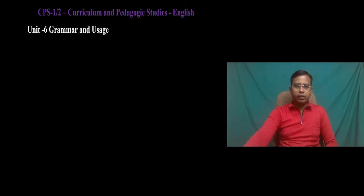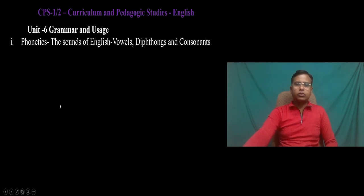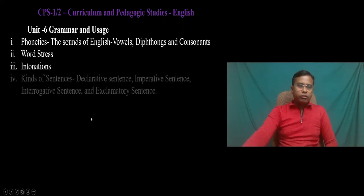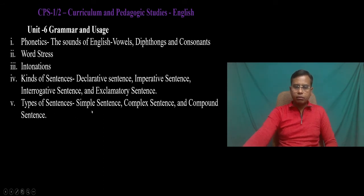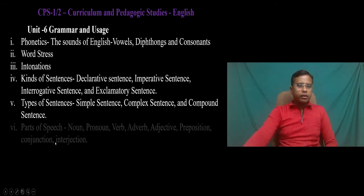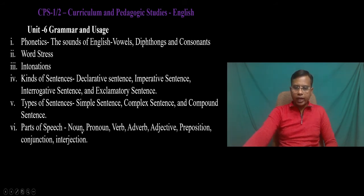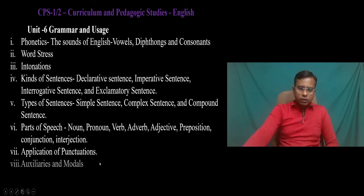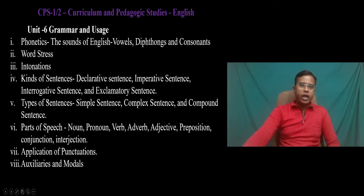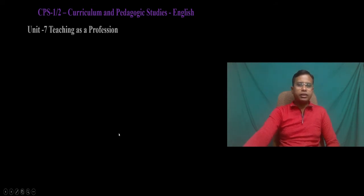Unit 6 is Grammar and Usage. Here we have to study phonetics — the sounds of English including vowels, diphthongs, and consonants — then word stress and intonation. Then kinds of sentences: declarative, imperative, interrogative, and exclamatory. Types of sentences: simple, complex, and compound. Parts of speech: noun, pronoun, verb, adverb, adjective, prepositions, conjunctions, and interjections. Application of punctuation, and auxiliaries and modals. All these grammar topics and their uses will be covered in Unit 6.